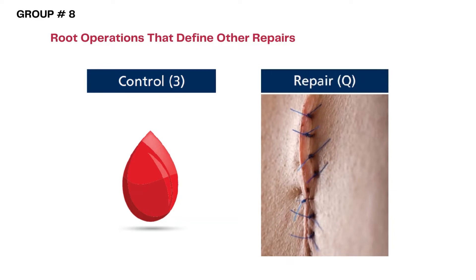These two root operations are used when the objective or the goal of the procedure is to control bleeding by closing off the body part, either by cauterization or by suturing the bleeding portion.